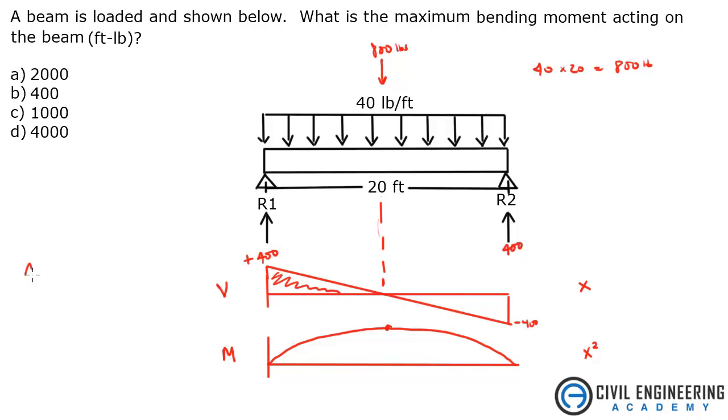So all we need to do is solve for the area. And that's going to be one half base, the base, which is 10 feet times the height, the height of this is 400 pounds. What does that give me? That gives me one half times 10 times 400. That's 2,000 foot pounds. That is our max moment, which is answer A.